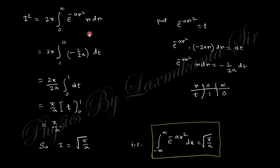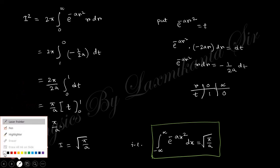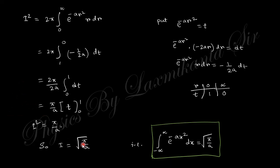Substituting t = e^(-ar²), so e^(-ar²) r dr = -1/(2a) dt, and changing limits — when r=0, t=1; when r=∞, t=0 — the minus sign interchanges the limits. The integral evaluates to π/a, so I² = π/a, giving I = √(π/a). Therefore, the integral from -∞ to +∞ of e^(-ax²) dx = √(π/a). You must remember this result to solve upcoming gamma function integrals.